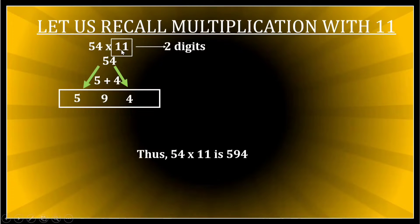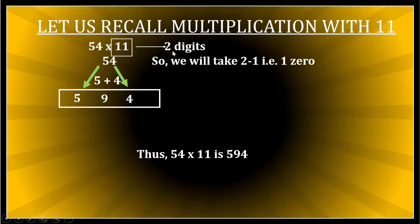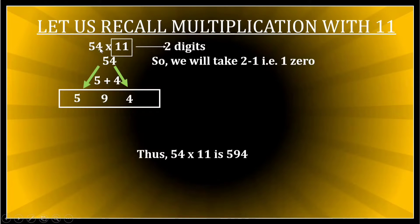When multiplying by 11 with two digits, we take two minus one — that is one zero — and we put one zero on each side of 54, sandwiching the number between two zeros. So I have 054 with a zero on the left and a zero on the right.